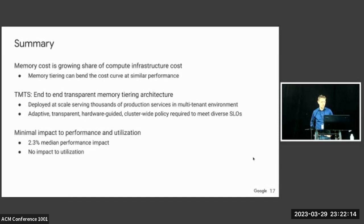In summary, memory cost as a share of compute infrastructure is a growing problem, and memory tiering can take a bite out of that. TMTS is an end-to-end transparent memory architecture deployed at Google for two years, achieving a 2.3% median impact to performance and no impact on utilization. Thanks, and I'd be happy to take your questions.